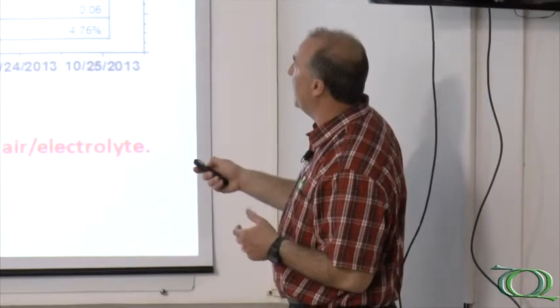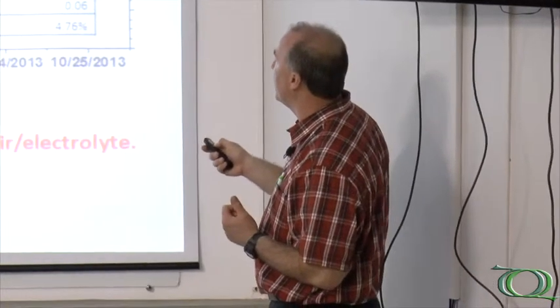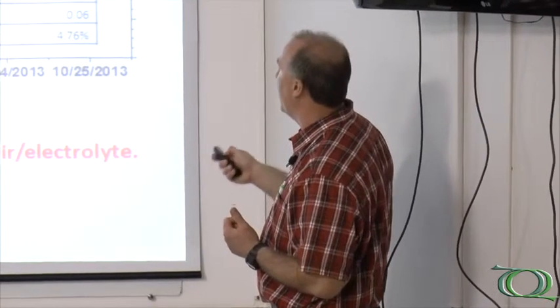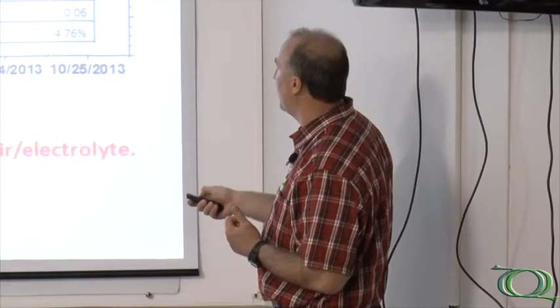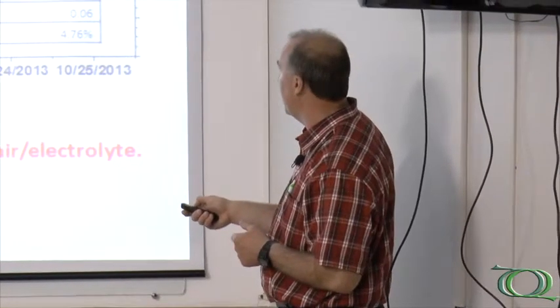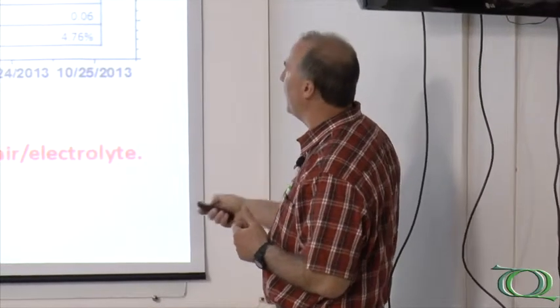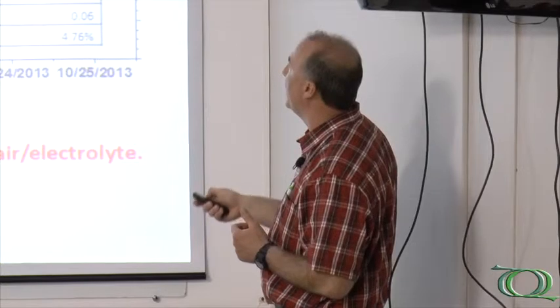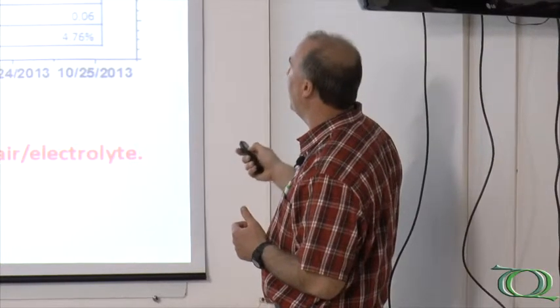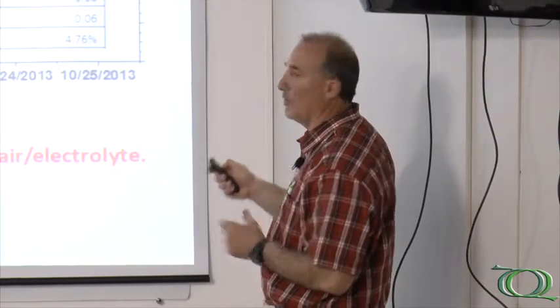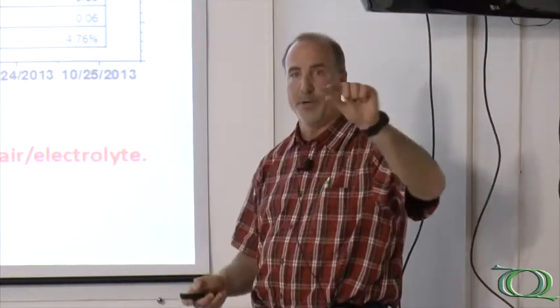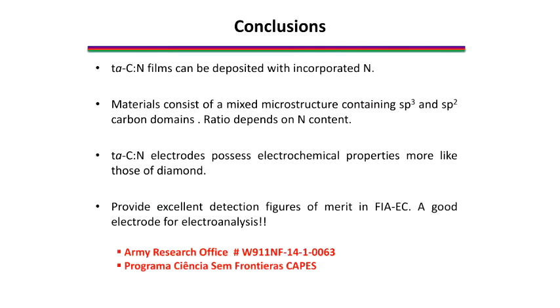You can see that the stability is shown over here in terms of the limiting current that we measure over the course of those days. This was over the course of one week in October, about a year ago. Virtually the same value — the error bars are shown but they're so small that they're within the marker, so you can't see them. Virtually the same, about 1.2 microamps — doesn't change over time. So this is a very, very good property of the material.